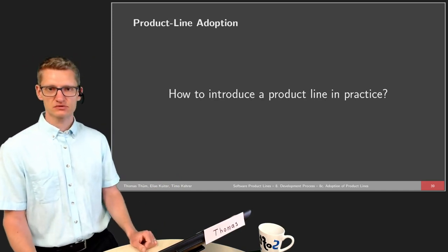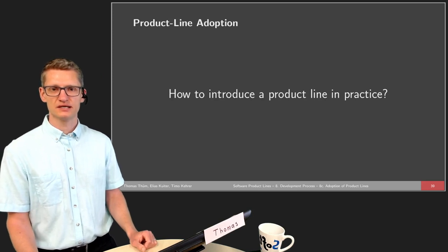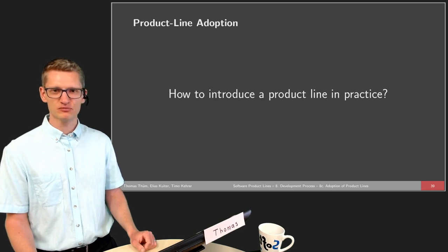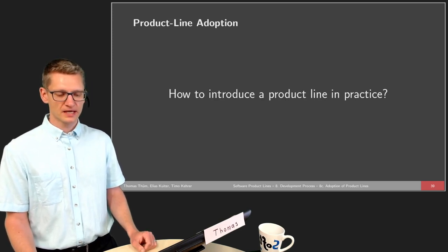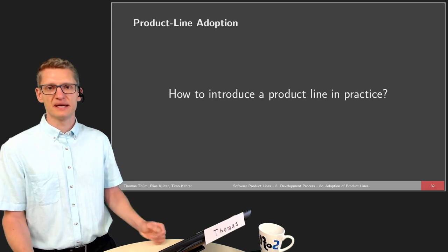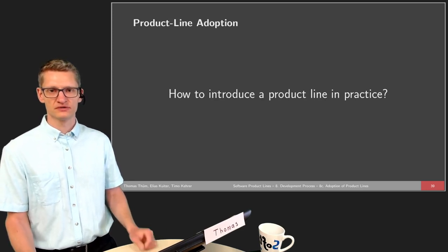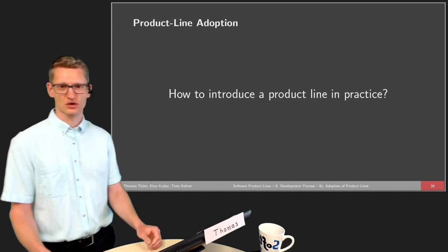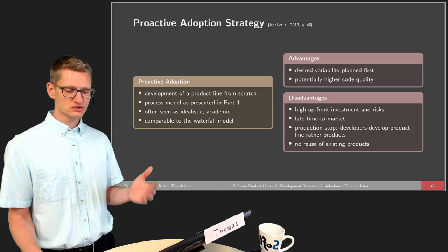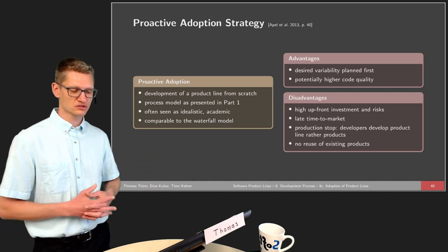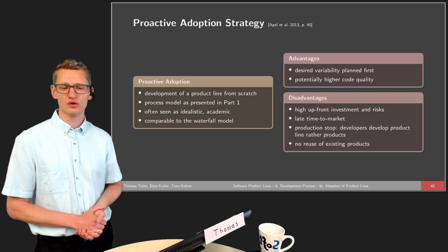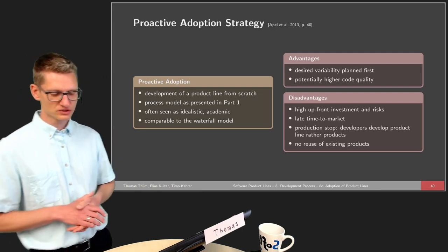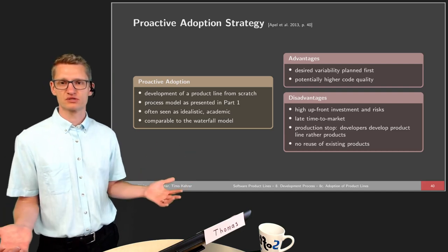There are three main strategies from the literature that I want to present now. These indicate the basic strategies that are feasible, and in practice people also use combinations of them. The first one is called the proactive adoption strategy. So what does proactive adoption mean? We develop a product line from scratch.